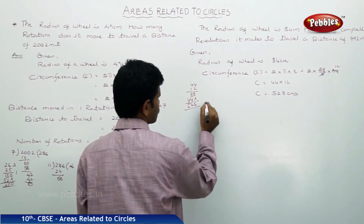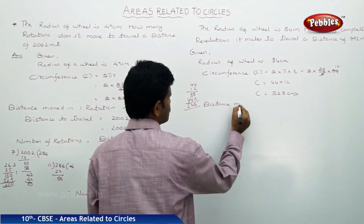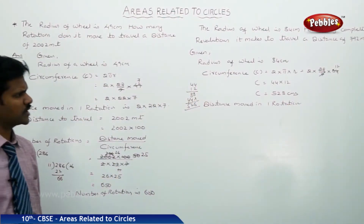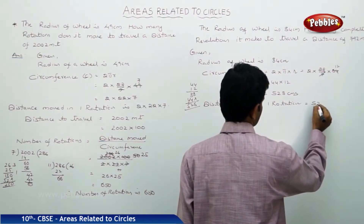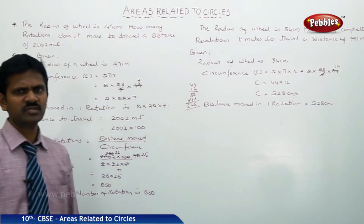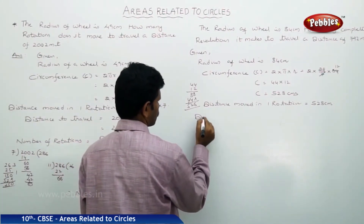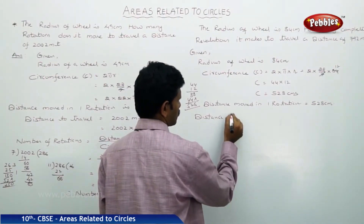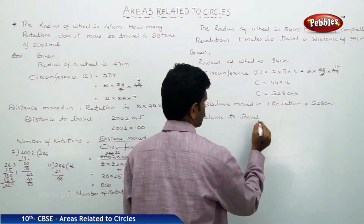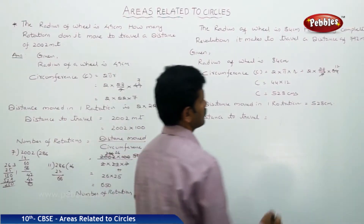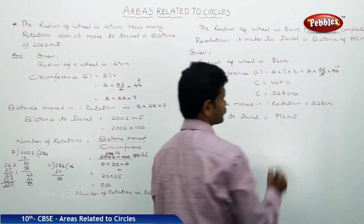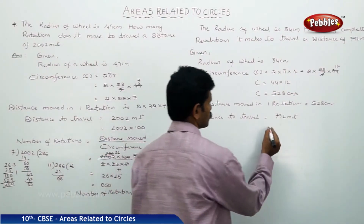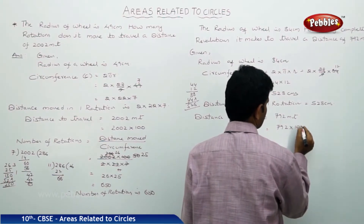Circumference means distance moved in one rotation. Distance moved in one rotation is equal to 528 centimeters. Distance to travel is 792 meters. The radius of the wheel is in centimeters, so convert: 792 into 100 centimeters.